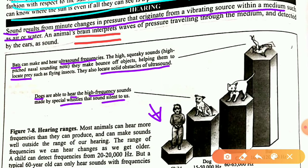Bats use ultrasound frequencies — they produce and also listen to ultrasound frequencies. They produce signals from their body, and when they encounter an obstacle, the signal returns to the bat as an ultrasound frequency. Like sonography, they also use ultrasound.